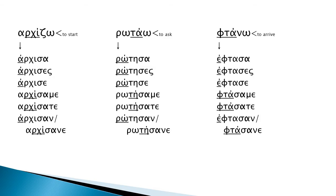Archizo becomes Archisa. Rotau changes to Rothisa. And Ftano to Evtaisa. As we can already notice, in cases where there is no space for the accent to move backwards, we add an epsilon so as to create an extra syllable and put the accent on.